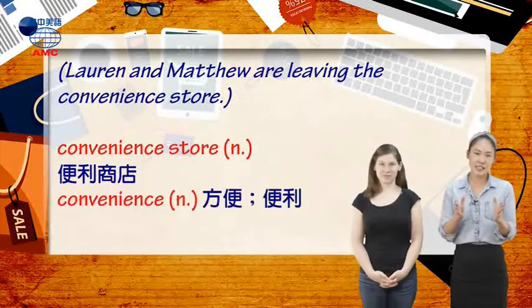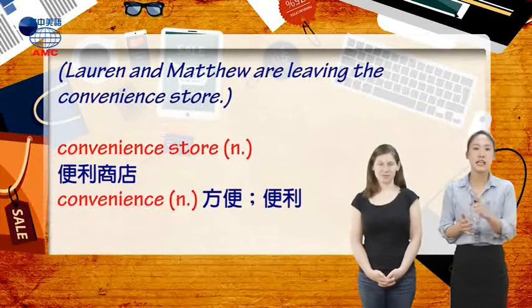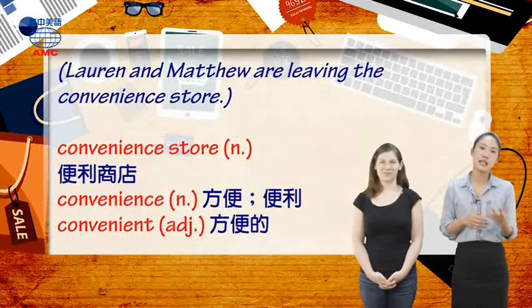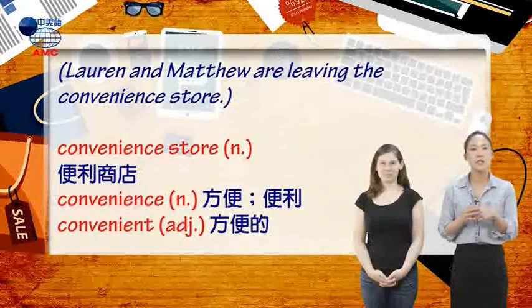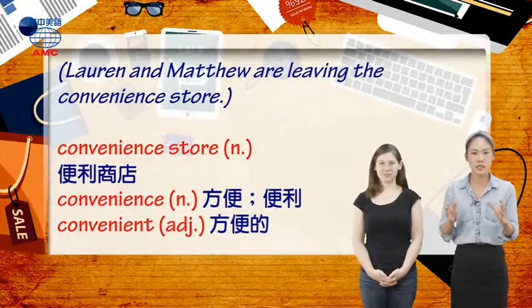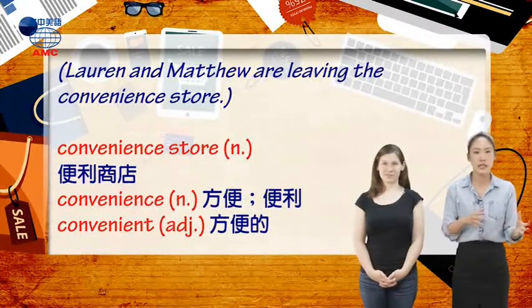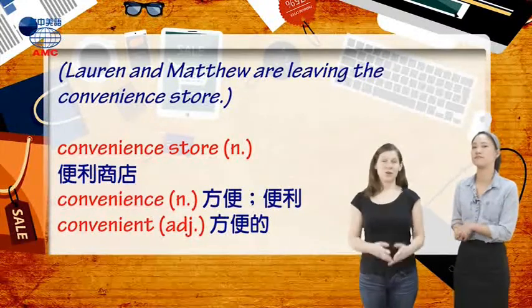那顾名思义呢,它是convenience这个字就是名词方便的意思。那形容词是convenient,我们会把字尾的CE改成T. 不过你要注意哦,用在便利商店里头的是名词,convenience. 那今天的对话情境呢,来到Lauren和Matthew正离开一家便利商店。